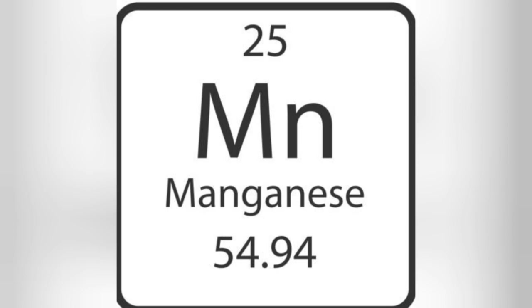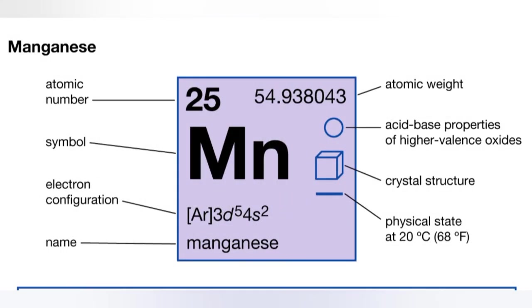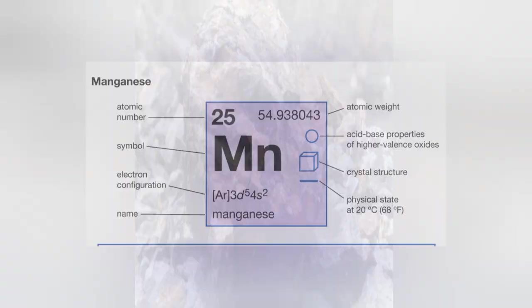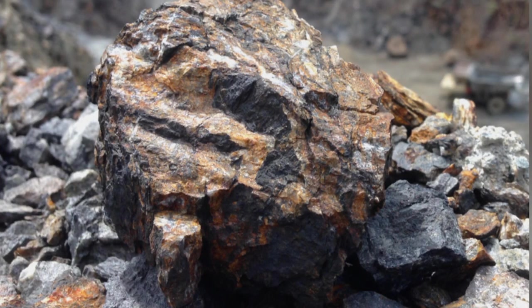It is a transition metal with a multifaceted array of industrial alloy uses, particularly in stainless steel. Manganese combined with other elements is widely distributed in Earth's crust. It is second only to iron among the transition elements in its abundance in Earth's crust.